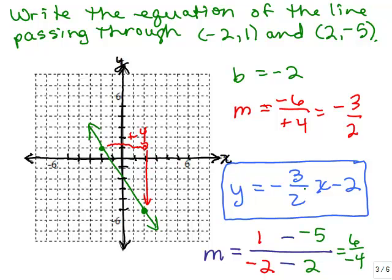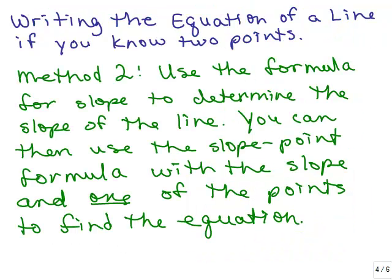The second method is a more algebraic way of doing it without getting out graph paper. You can use the formula for slope to determine the slope of the line, and then use the point-slope formula using that slope and one of the points you're given to find the equation. Or you could plug in an ordered pair x and y, and the slope, and solve for b.